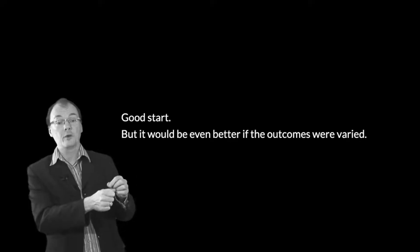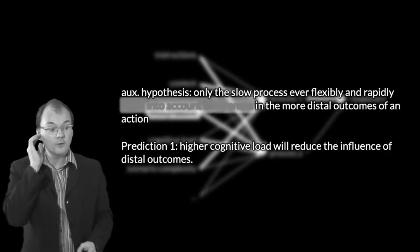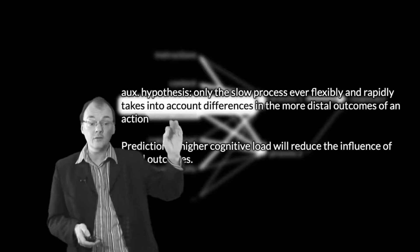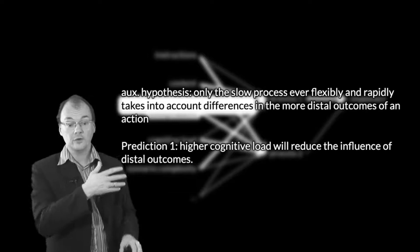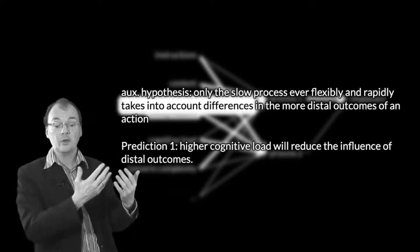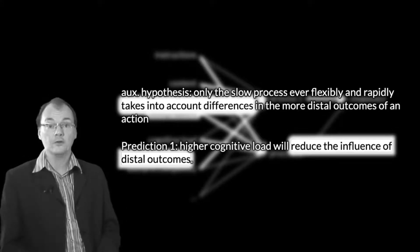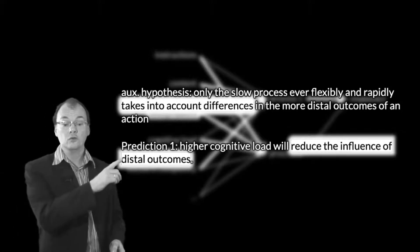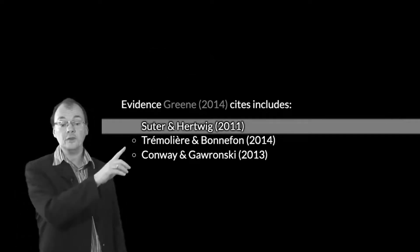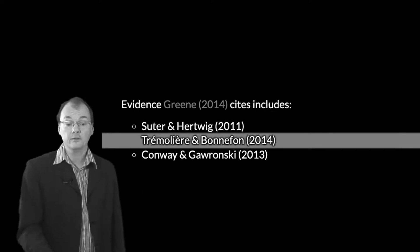I think this evidence could be even better, because it doesn't involve any variation in the outcomes. What we really want to see is how people respond to an action depending on the more distal outcome of that action — for example, am I killing one person to save one person, or to save five? We ought to see that as we speed things up, we get less sensitivity to the outcomes. The auxiliary hypothesis is about the slow process taking into account differences in more distal outcomes, so to show that, we need to vary the outcomes. It's hard to be sure we've confirmed that prediction without doing so. It would be nice to look at a study where the outcomes are varied.